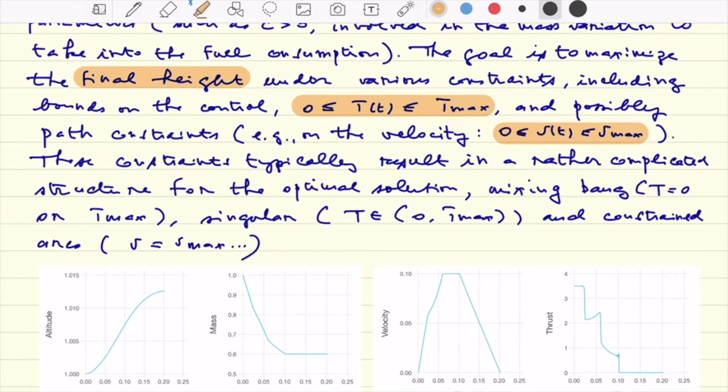This kind of bound on the state would be quite a difficult thing to take into account using the maximum principle in an indirect method, such as shooting. Clearly, it could be possible to do so, but one would have to guess, a priori, the structure of the solution, namely, when will this constraint be active and so.